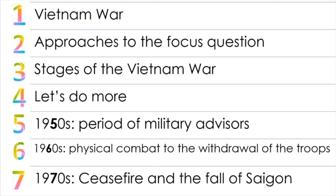This is a very useful way to remember the most important aspects of this focus question in the exams. Number one, the Vietnam War. Number two, approaches to the focus question. Number three, stages of the war. Five, the 1950s period of military advisors. Six, the 1960s for physical combat along with the withdrawal of the troops. And seven is the 1970s — the ceasefire and the fall of Saigon. If you can remember this, you'll have a good idea of how to prepare for this question in the exams.